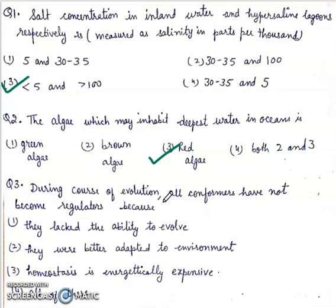Third, during course of evolution, all conformers have not become regulators because: first, they lacked the ability to evolve; second, they were better adapted to environment; third, homeostasis is energetically expensive; fourth, all of these. Right answer will be third, homeostasis is energetically expensive.